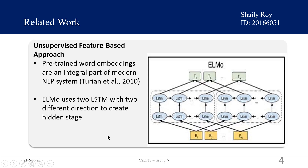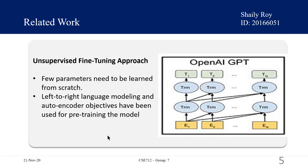They have also mentioned the unsupervised fine-tuning approach. According to Colbert and Weston, as with the feature-based approaches, the first works in this direction only pre-trained word embedding parameters from unlabeled text. OpenAI GPT, the Generative Pre-trained Transformer, is an unsupervised transformer language model which uses a left-to-right transformer.